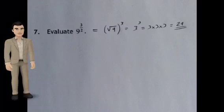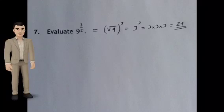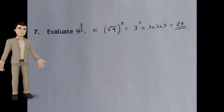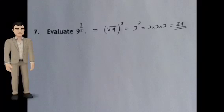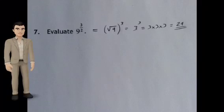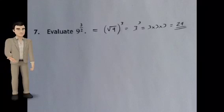The square root of 9 is 3. So that's 3 cubed, which is 3 times 3 times 3, which is 27 — our final answer.